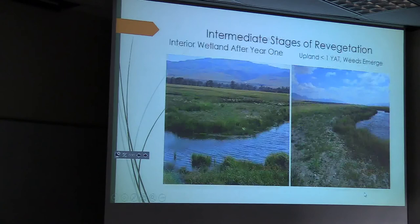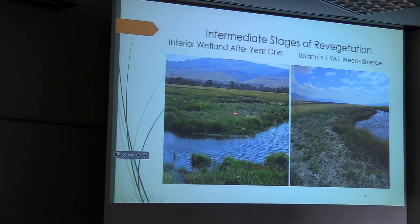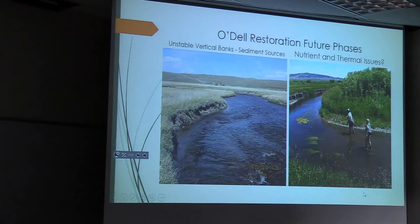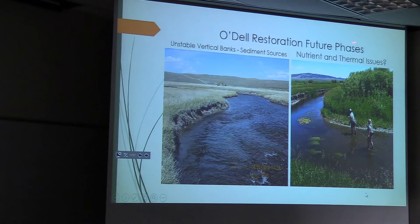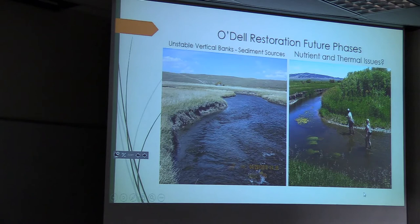Upland seeding — this is how fast it can recover: one year, with some Canada thistle coming in, but this is less than a year. The types of banks we're treating are major sediment sources that result in over-widening of the channel. Over-widening and sediment cause nutrient and thermal issues. We've got an example of a diverse age class and diverse species on one side, and in contrast Kentucky bluegrass or red top vegetation on the opposite side — two contrasting scenarios.